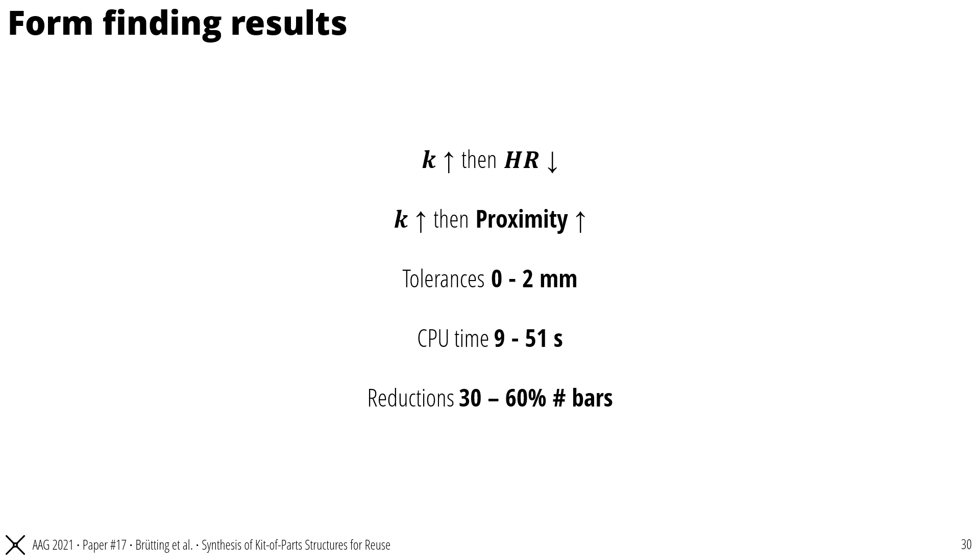To summarize the form-finding results, we have seen that when we increase the number of clusters K, the reuse rate decreases. But increasing K also helps to preserve proximity to target shapes. In general, the case studies have shown that the member lengths within each cluster match to a very small tolerance, which is acceptable for building construction. For these case studies, with more than a thousand bars, the CPU times are short and allow an interactive workflow. And most importantly, through being able to reuse bars among multiple structures, we can achieve a significant reduction in the number of bars that need to be produced compared to one of construction.